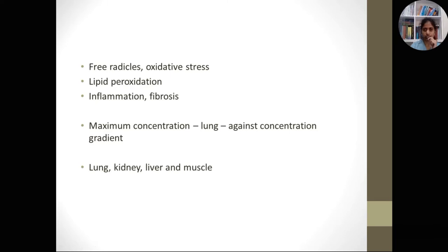The main pathophysiology of organ dysfunction in paraquat poisoning is free radical generation. It undergoes a series of enzymatic reactions and produces superoxide free radicals, and also alters lipids by oxidation, which further enhances oxidative stress and injury.